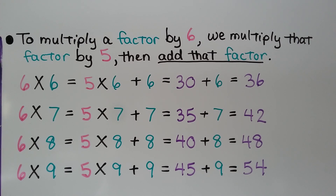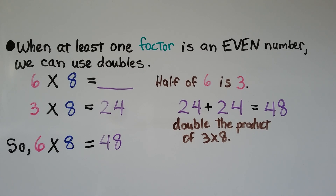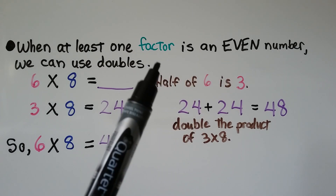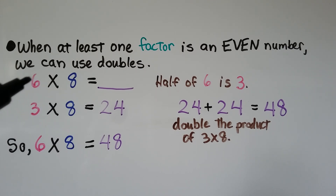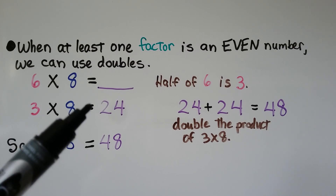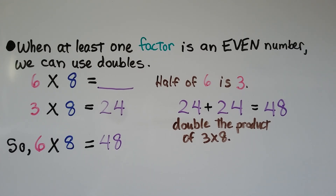If you find the 5 times table easier to get a product, use the 5 times table and then add another group of that number. When at least one factor is an even number, we can use doubles — it has to be an even number so we can split it. So if we have 6 times 8, we can split 6 into a 3 and a 3, since half of 6 is 3. We do 3 times 8, which is 24, and then add another 24. We double the product of 3 times 8: 24 plus 24 is equal to 48, so 6 times 8 is equal to 48.